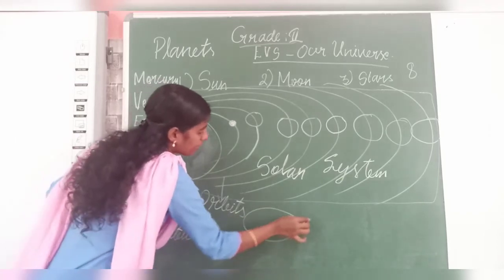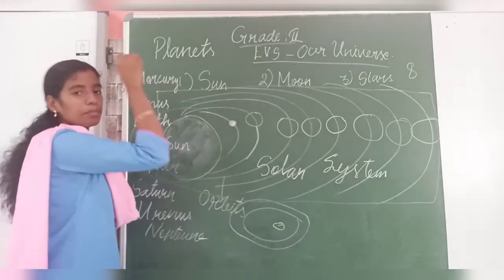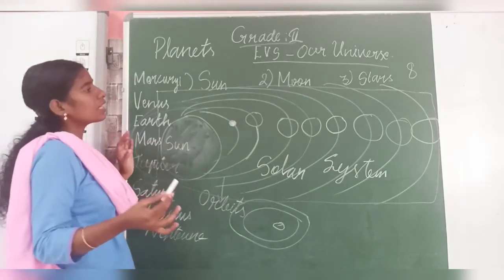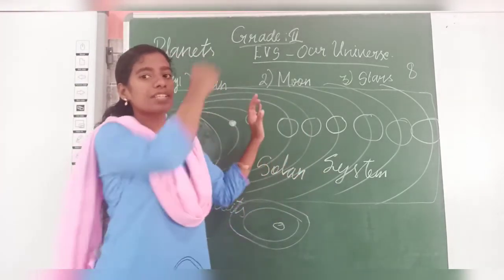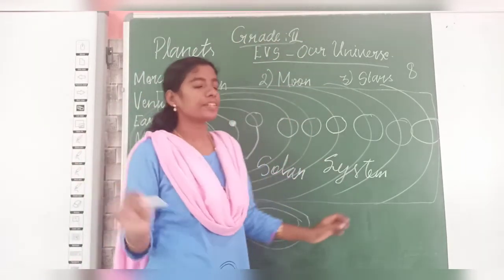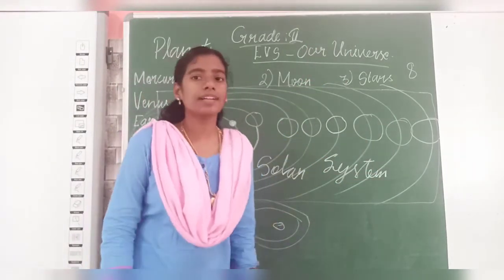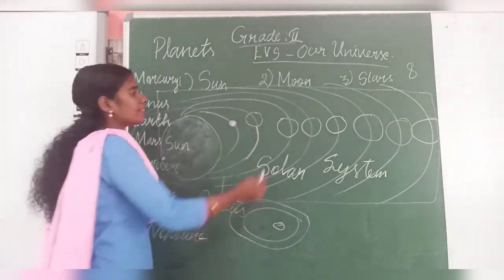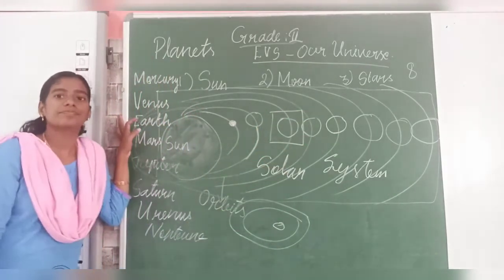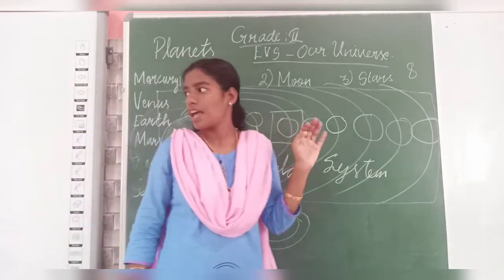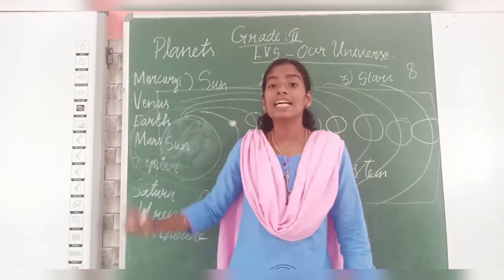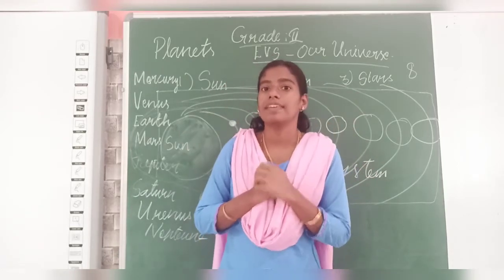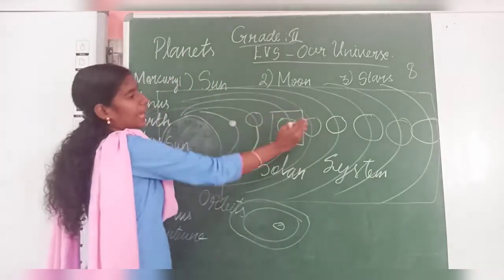So the sun is in the center with 1, 2... eight orbits around it. These eight huge bodies are called planets. These planets are all around the sun, and this total system is called the solar system. The first planet is Mercury, second is Venus, and the third one is Earth — the planet on which we live.